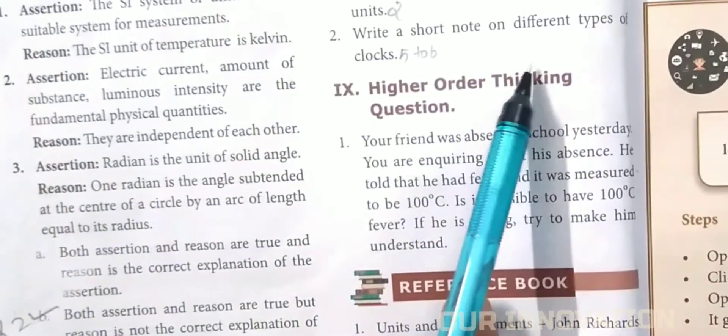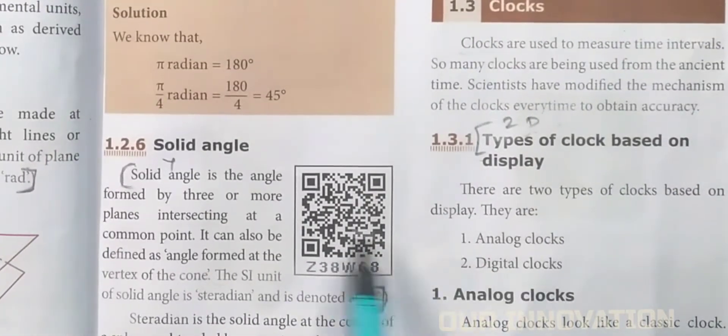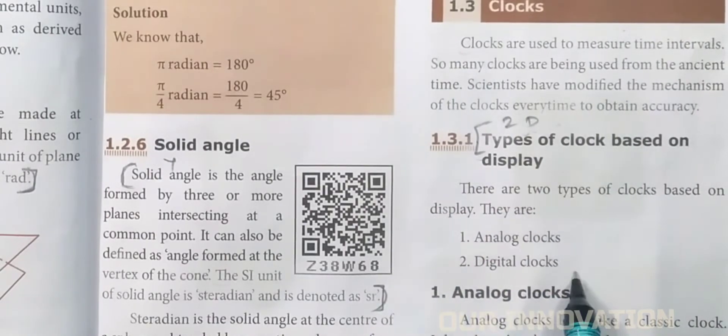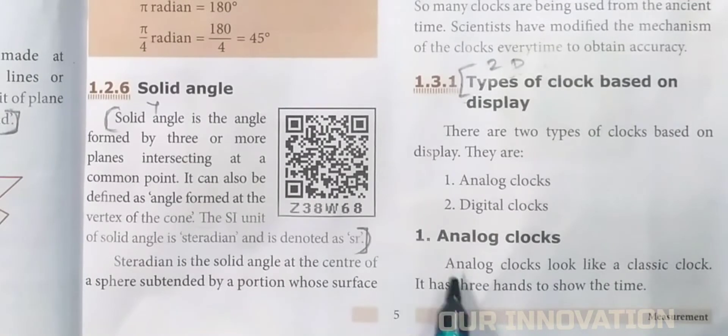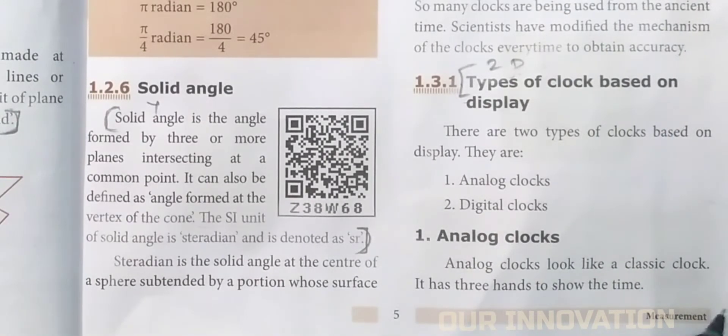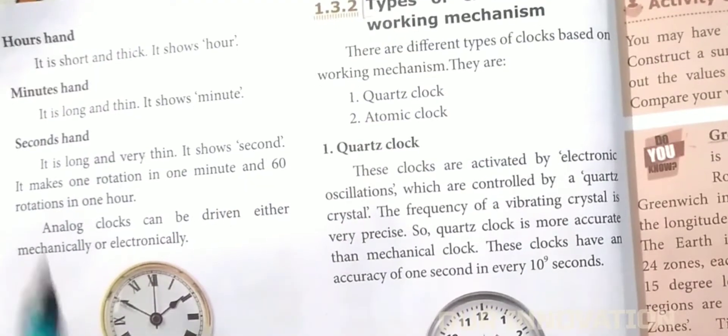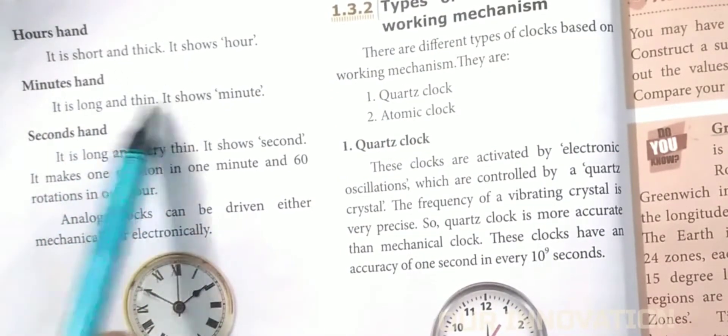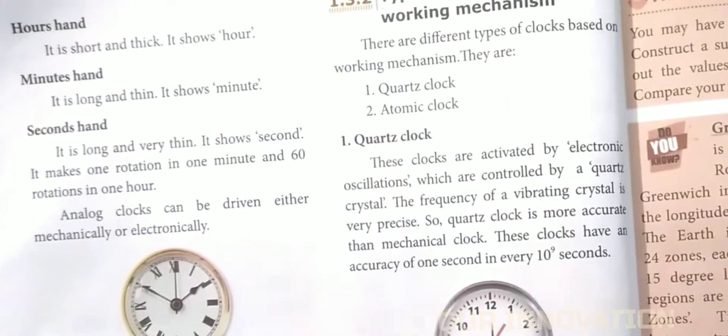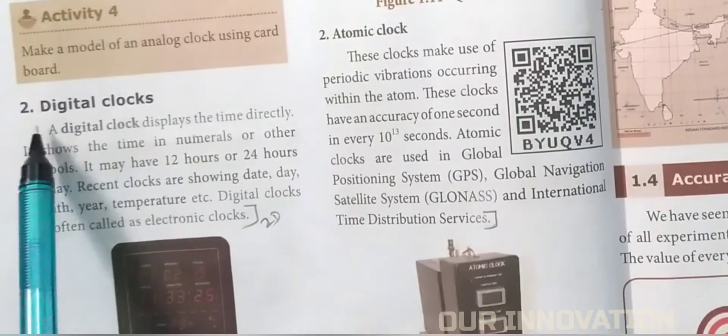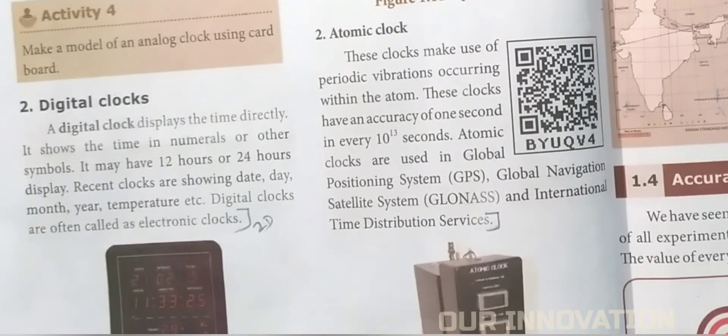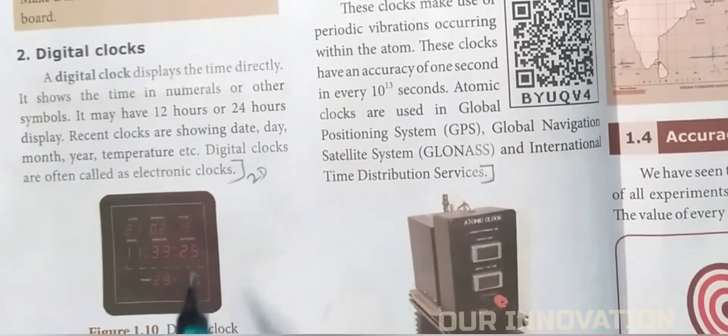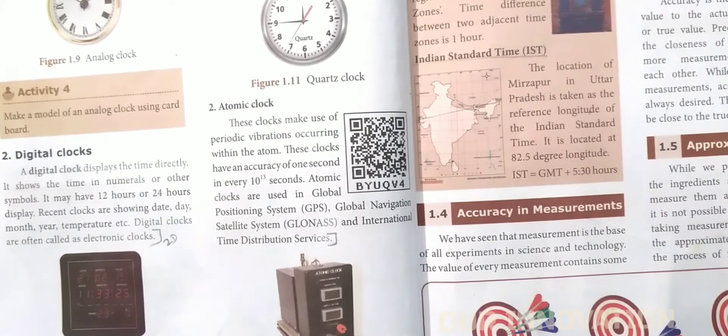Write a short note on different types of clocks. Page number C: Mark it from here. Two types of clocks are there - analog clock and digital clock. Analog clock has classical hands - three hands: hour hand, minute hand, second hand. So you have to write this fully. Then digital clock - here you write this heading and in digital you can see only the numbers. This is an example of digital clock.